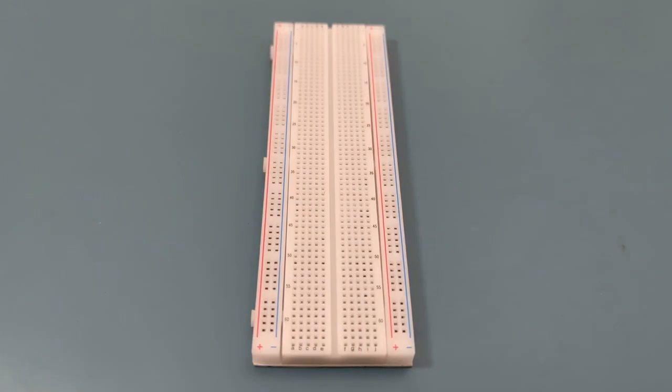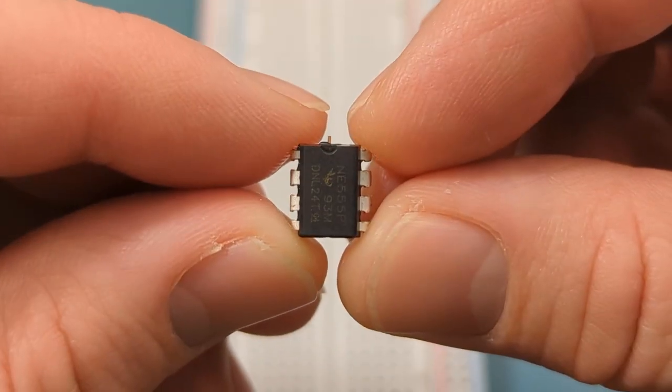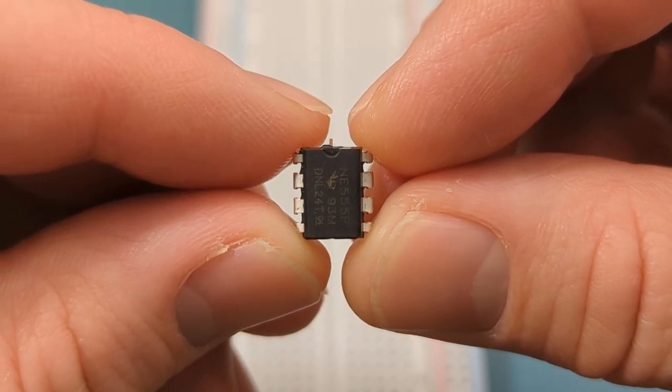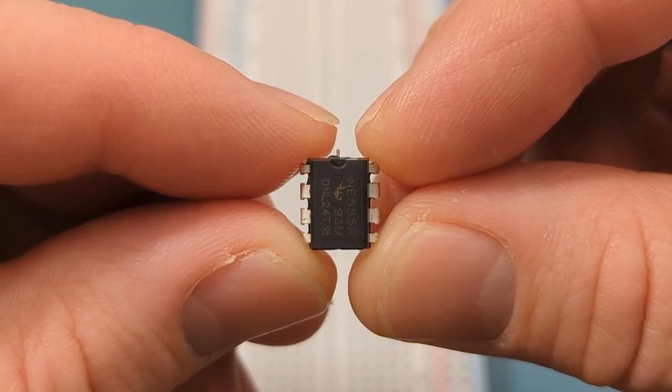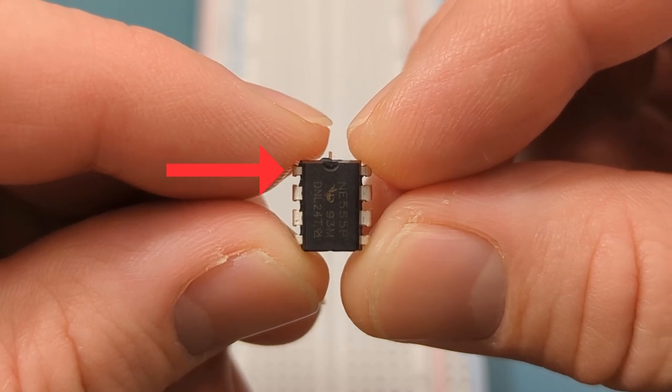Let's set up the circuit step-by-step. Begin by positioning the 555 timer IC on the breadboard. The pins are numbered counterclockwise, starting from the top left corner.